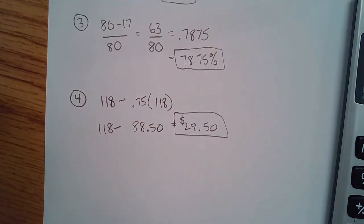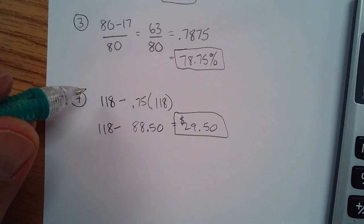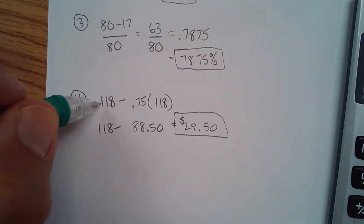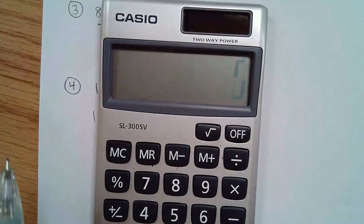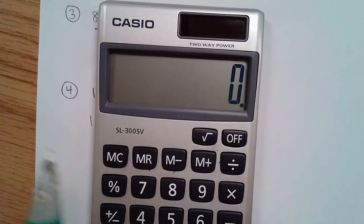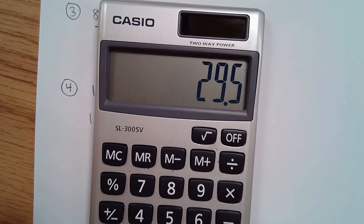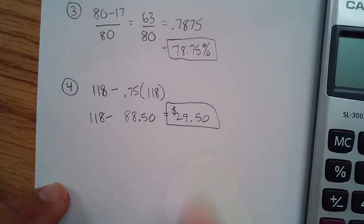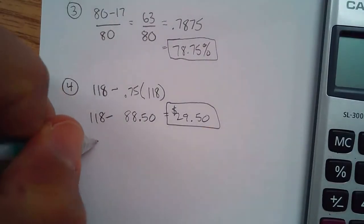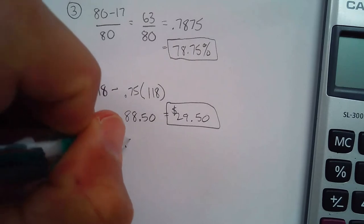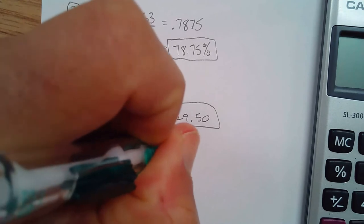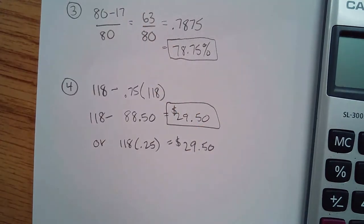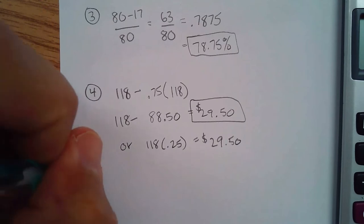What you could also do is use 118 times 0.25, because you don't pay 75% but you do pay 25%. So 118 times 0.25 gives the same $29.50. Either method works, so I thought I'd just throw that in there.